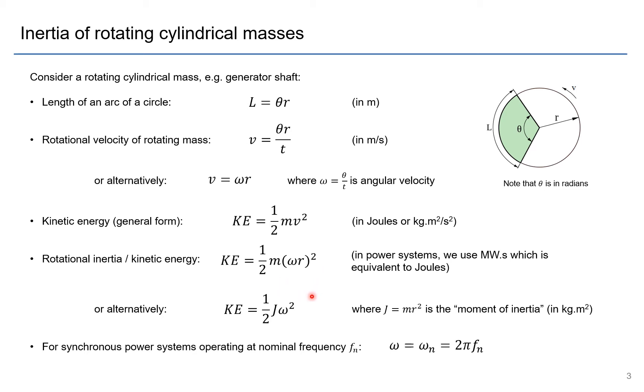Alternatively, we can describe that as half Jω² where J is mr² and that is called the moment of inertia in kilograms per meter squared. And for synchronous power systems we operate at a nominal frequency fn, and so we have this ωn which is equal to 2πfn.